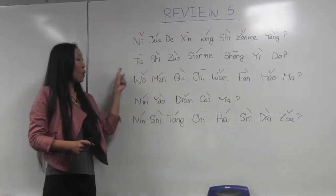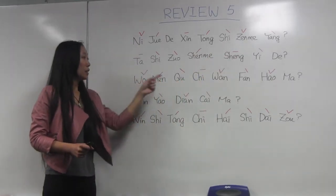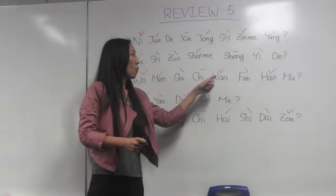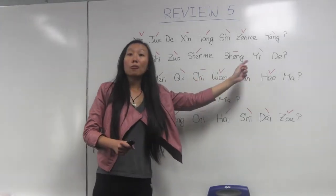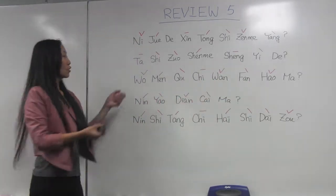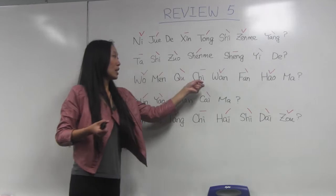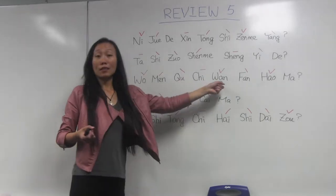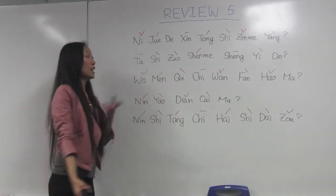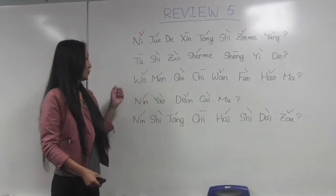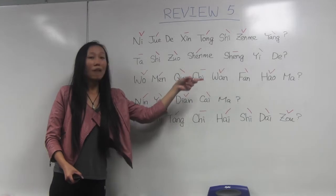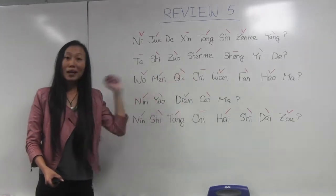我们去吃晚饭好吗? 我们 means 'we,' 去吃晚饭 means 'go eat dinner,' and 好吗 is a question tag meaning 'is it okay?' or 'is it good?' So: shall we go eat dinner? 我们去吃晚饭好吗?